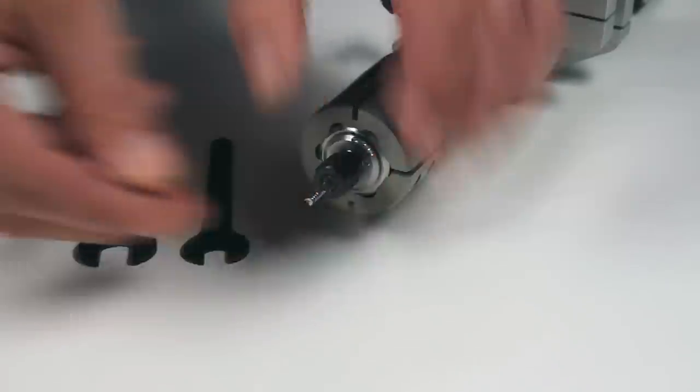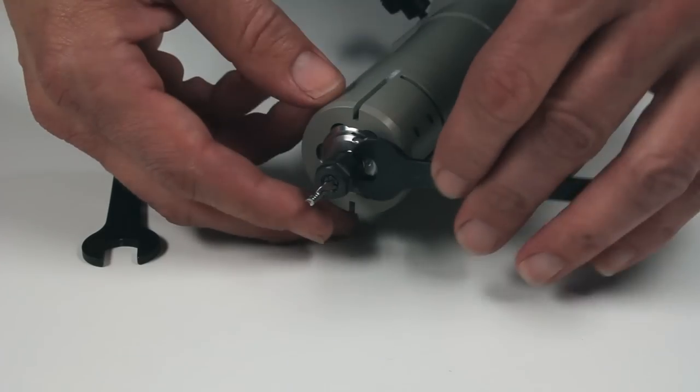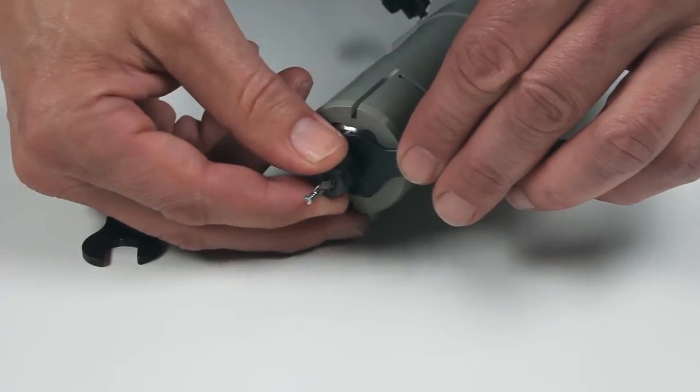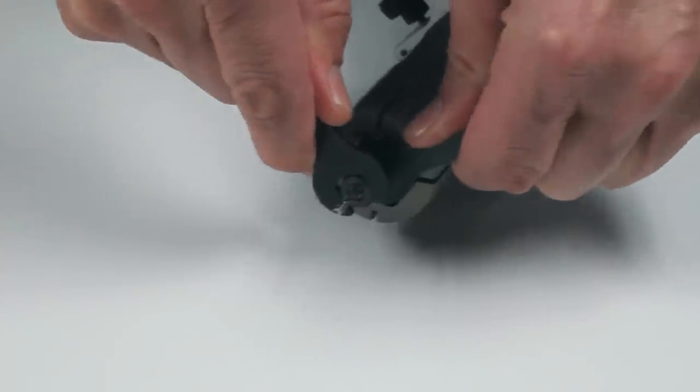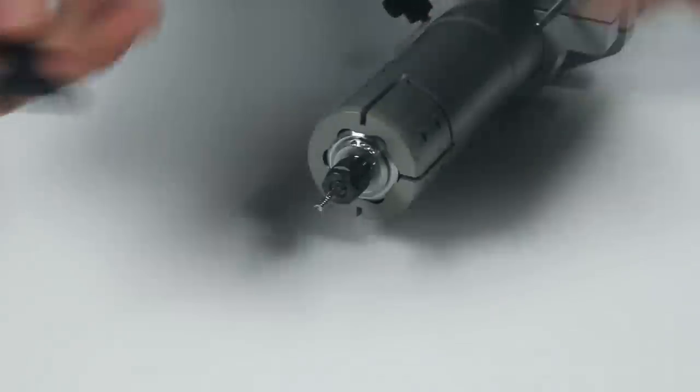Secure the shaft with the spanner with 8 mm width. Use the spanner with 11 mm width to tighten the clamping nut by turning it in a clockwise direction.